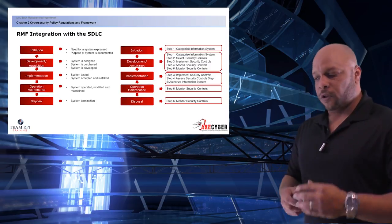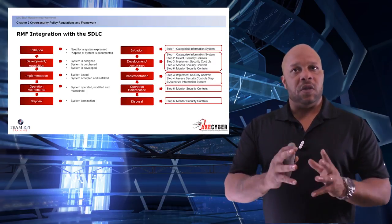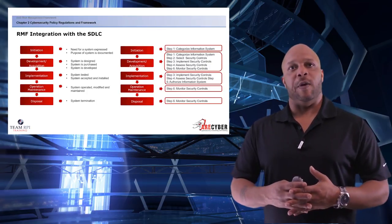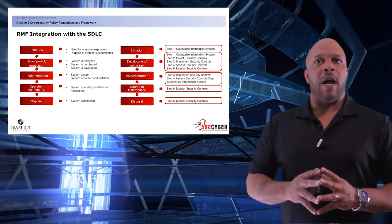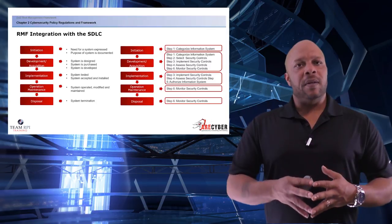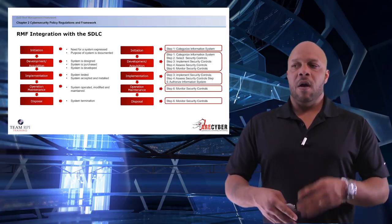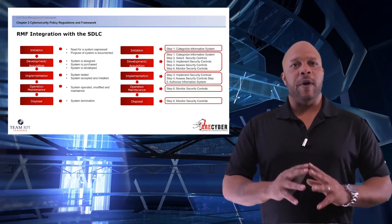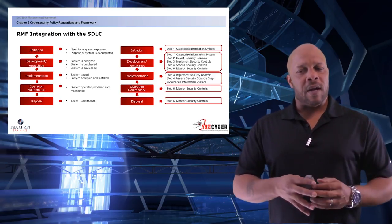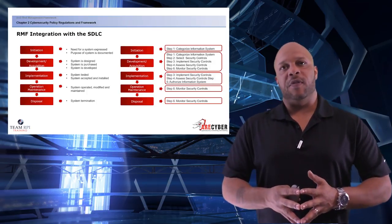Let's take a look at how the risk management framework integrates with the system development lifecycle. There is a specific RMF step to take at every phase of the classic SDLC. The phases are: initiation, development and acquisition, implementation, operation and maintenance, and disposal. Now let's look at which RMF step fits with which SDLC phase. Initiation maps to step one. Development and acquisition maps to steps one, two, three, four, and six.